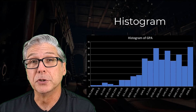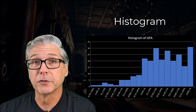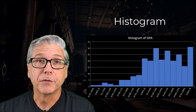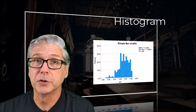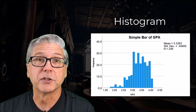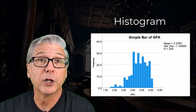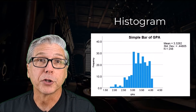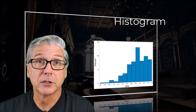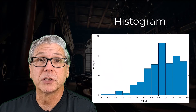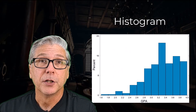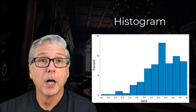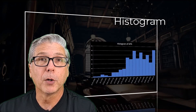Sometimes we get to choose these groups ourselves and sometimes the software chooses for us. If the software chooses the groups, we usually have some options where we can override the decisions made by the software and ultimately make the decisions ourselves. As with qualitative data, the larger the number or percentage of data in a particular group, the longer the bar will be.